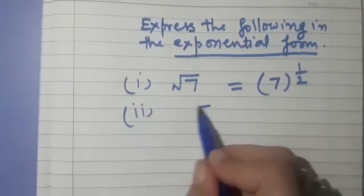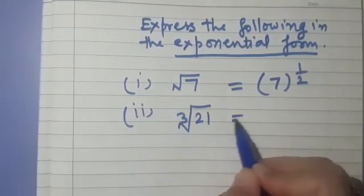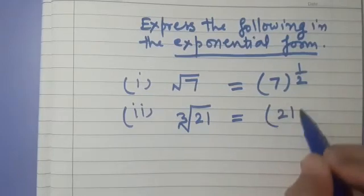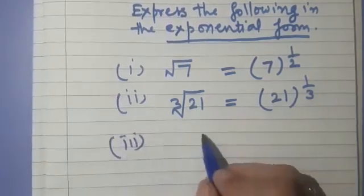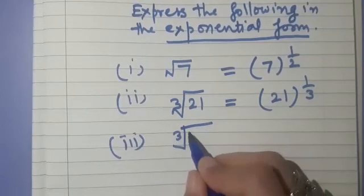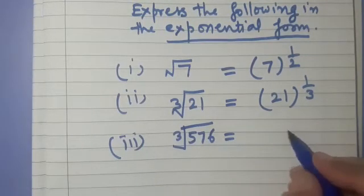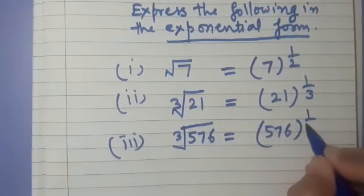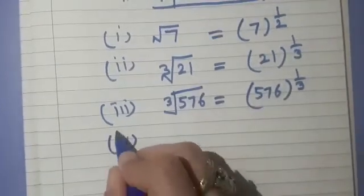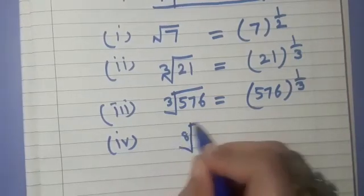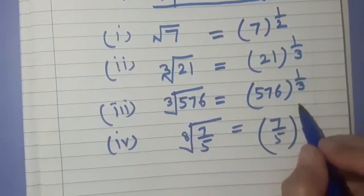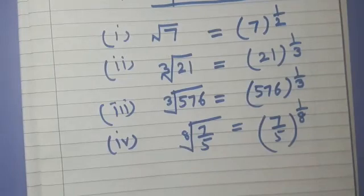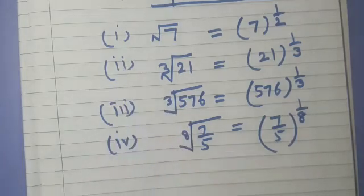Let us take more examples. Cube root of 21 is written as 21 raised to the power 1 by 3. Cube root of 576 is written as 576 raised to the power 1 by 3. And the 8th root of 7 upon 5 is written as 7 upon 5 raised to the power 1 by 8. This is how we express in the exponential form.